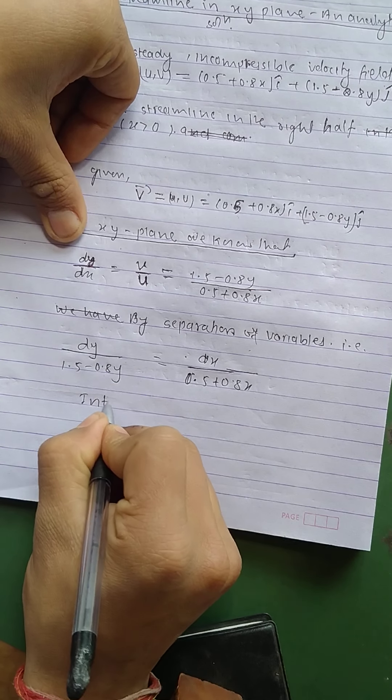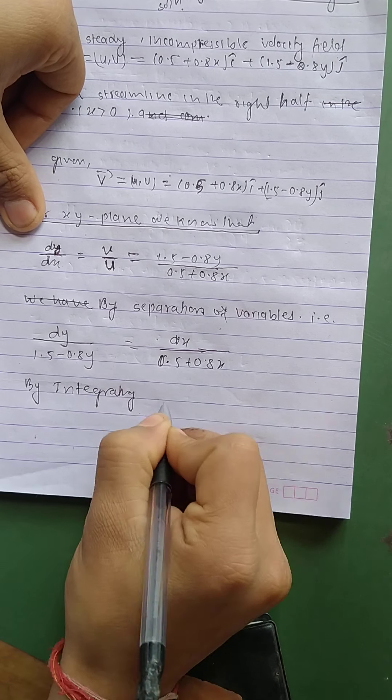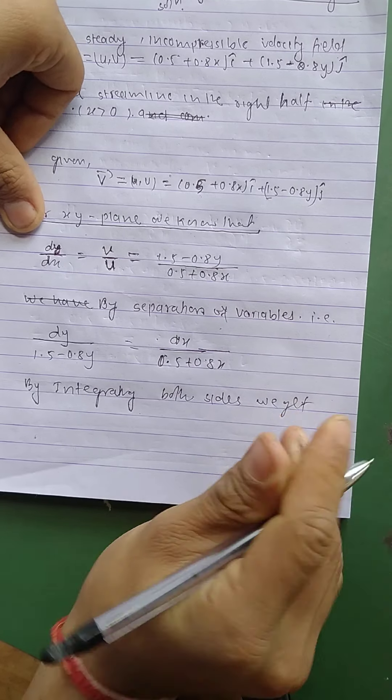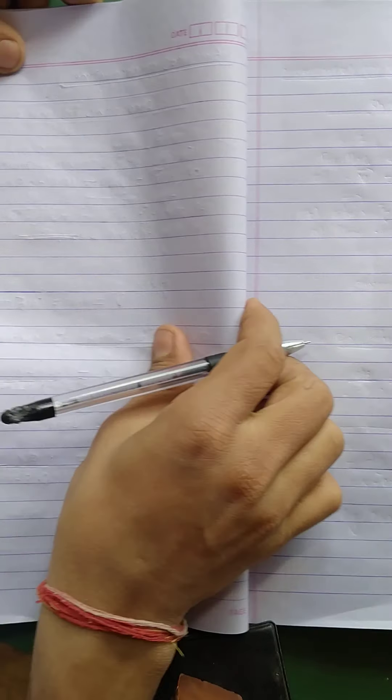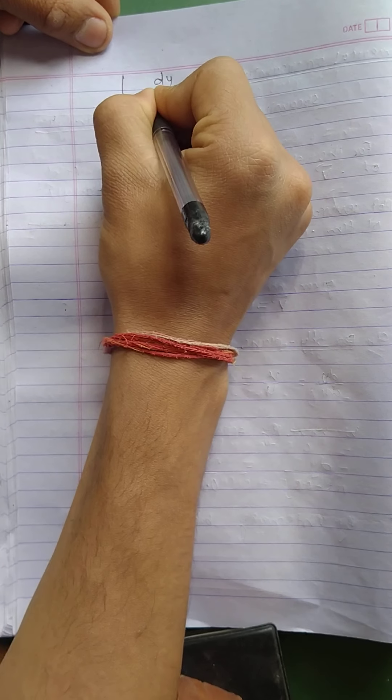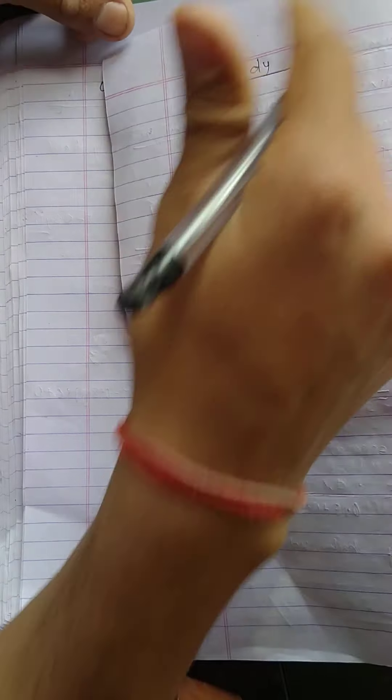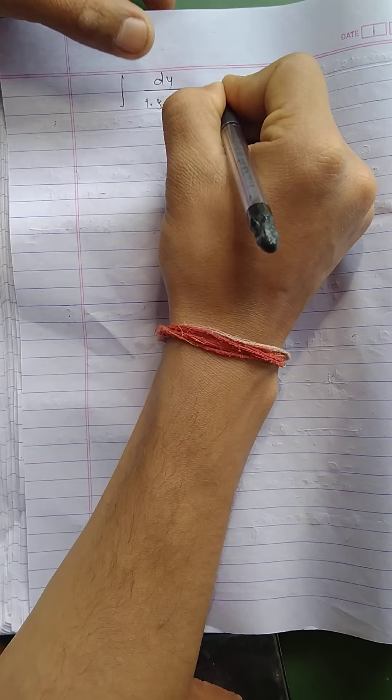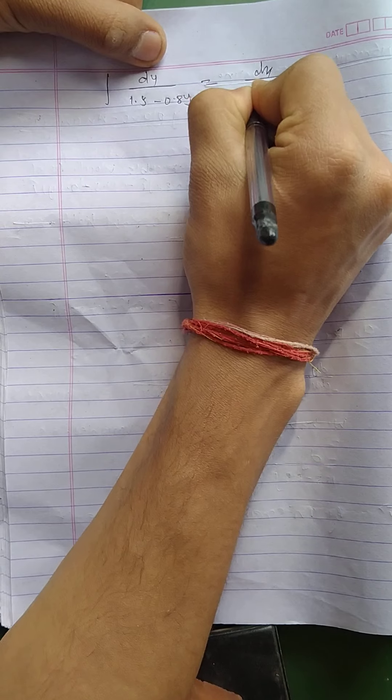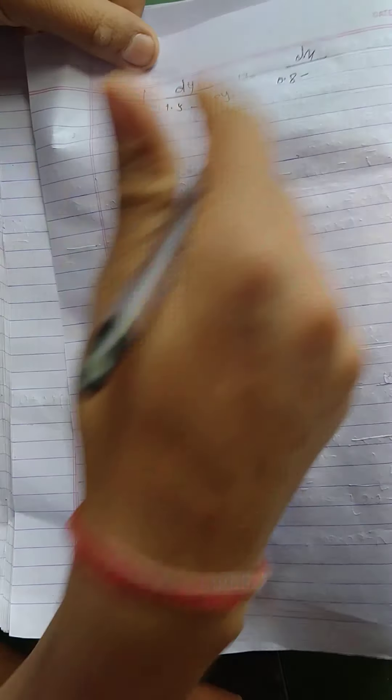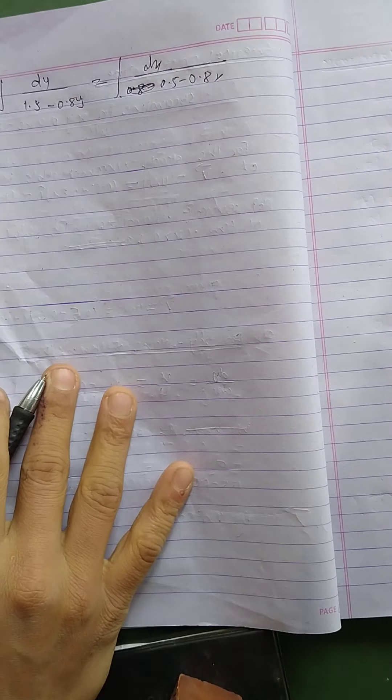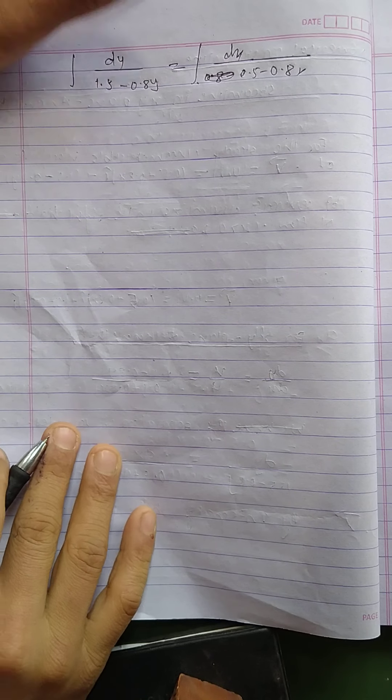Now integration, integrating both sides. By integrating both sides, we get integration dy by 1.5 minus 0.8y equals integration dx by 0.5 plus 0.8x. This is an integration.